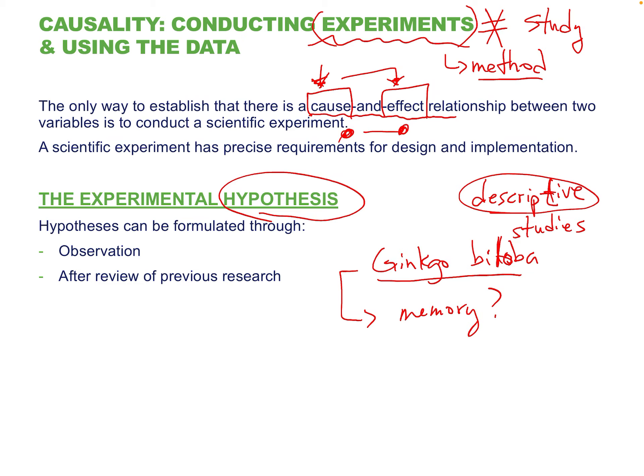We could do this as a correlational study — give people a survey, ask them if they take herbs like ginkgo biloba, give them a memory test, and find a relationship between the two. But because it's descriptive, you're only describing people who are either taking it or not. You did not actively give anyone the supplement, so you cannot claim it directly caused any memory improvement.